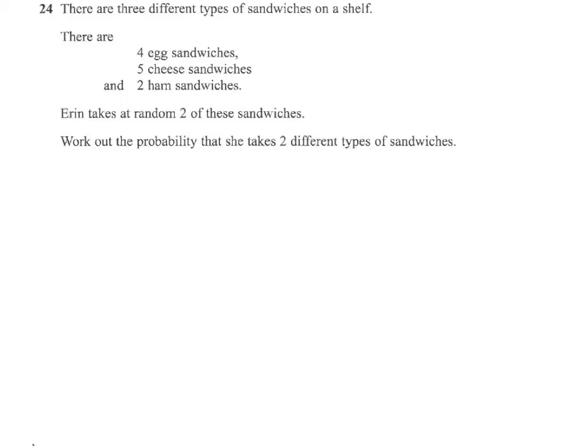So Erin could take egg first, which would be a four out of eleven possibility. And then she could take something different. So she could take cheese second, which would be five. Well, it would now be five from ten, of course, because she's taken one of the cheese.